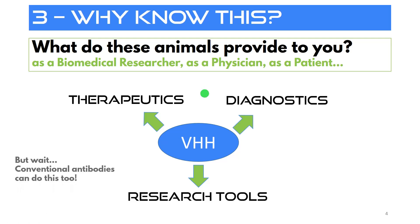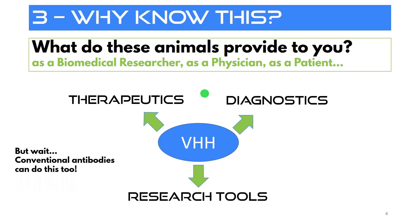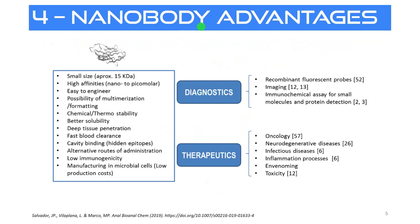You might be wondering: conventional antibodies can do this too — they're also used in these areas. Well, nanobodies actually have their advantages. First, due to their small size, they also have high affinities — nano- to picomolar affinities — which means they strongly bind to their target, to their antigen. They're very easy to engineer; you can actually multimerize them, chaining multiple nanobodies together in various formats.